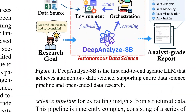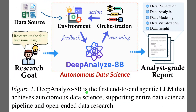Figure 1 shows the overall loop that turns raw data and a research goal into an analyst-grade report. It highlights an agentic model, meaning a system that plans actions and interacts with tools to progress toward a goal. The central box depicts orchestration with reasoning that triggers code execution in the environment, which returns feedback for iteration. The left panels mark inputs from data sources and specified goals. The right panel represents the final report across preparation, analysis, modeling, visualization, and insight.